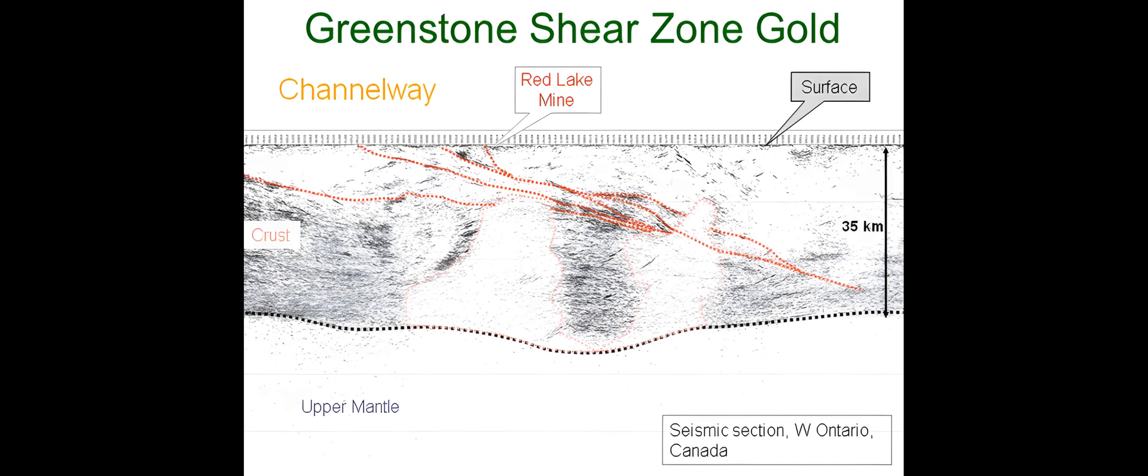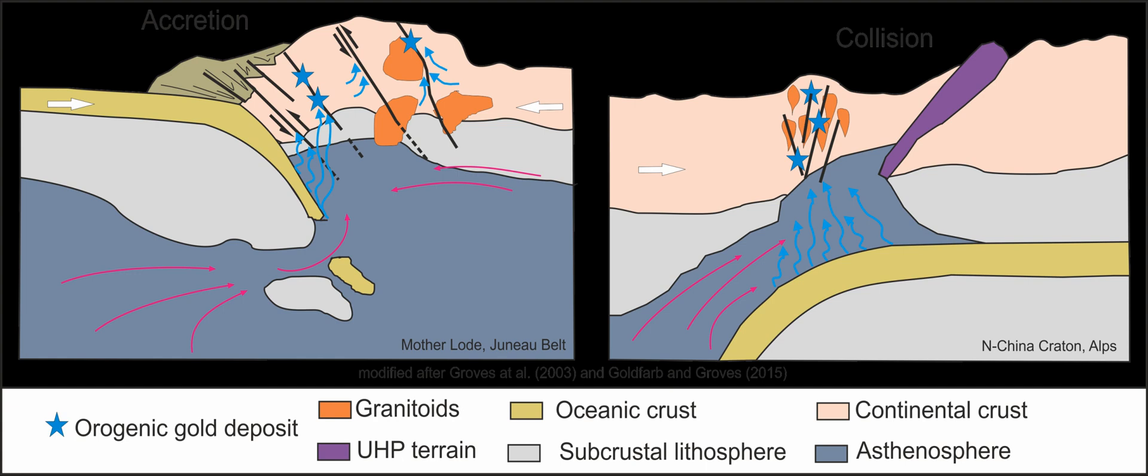Most likely, fluids have been produced under prograde greenschist to amphibolite facies metamorphism at 220 to 450 degrees Celsius and 1 to 5 kilobar. The generally low salinity of the hydrothermal fluids can be attributed to devolatilization of minerals associated with metamorphic phase reactions involving dehydration and decarbonation. Composition of produced fluids vary depending on the pressure and temperature conditions and rock chemistry, and may be influenced by fluid-rock interactions along the pathway.